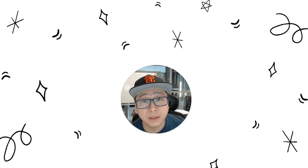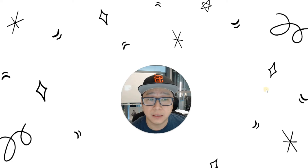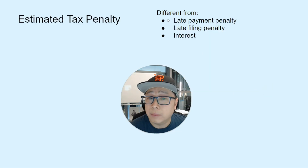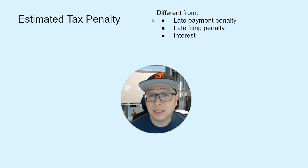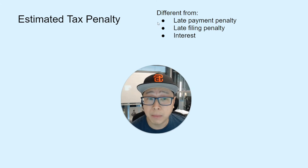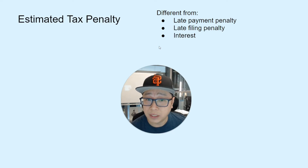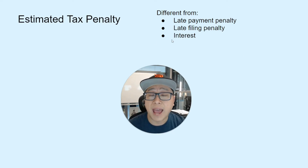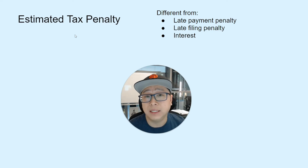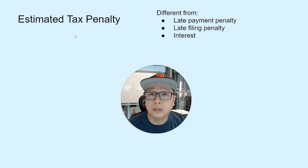For estimated tax penalties, also known as underpayment penalty, this is a penalty during the year. Going through the slides, this is actually different from the late payment penalty, the late filing penalty, and interest. All those penalties are usually incurred after the due date of the tax return, while the estimated tax penalty is the penalty you incur throughout the year for not paying enough taxes.